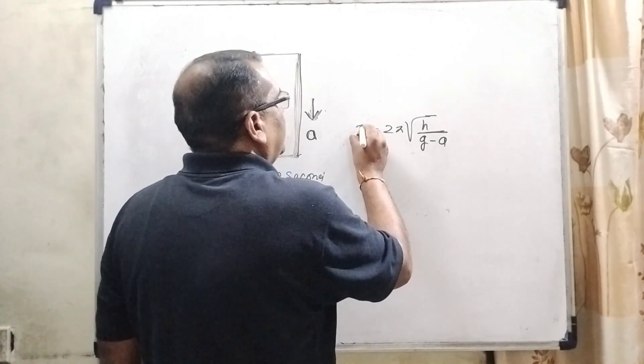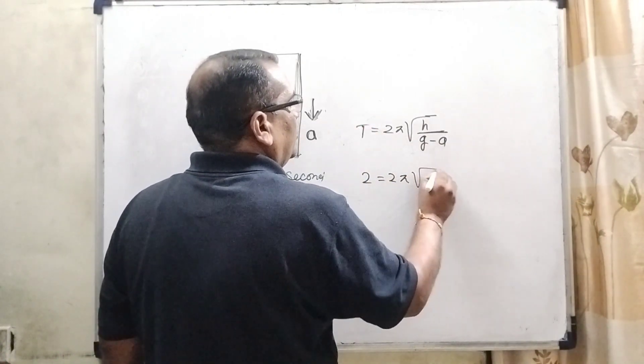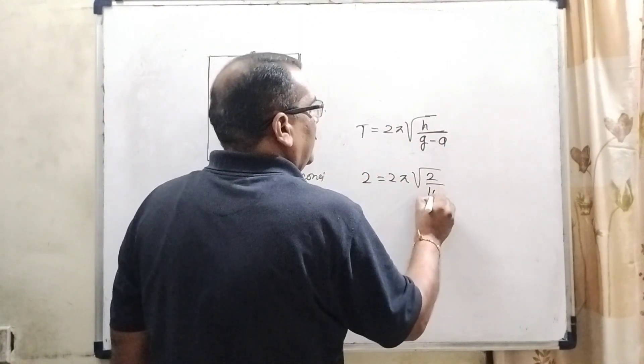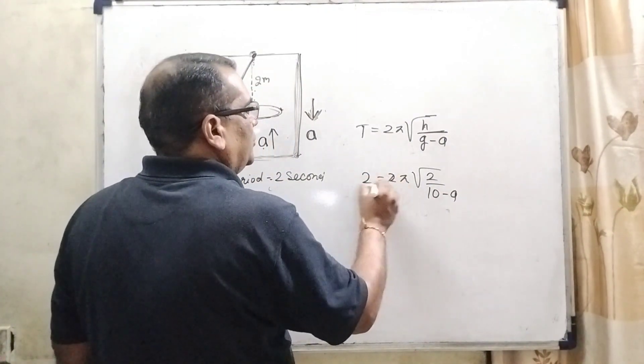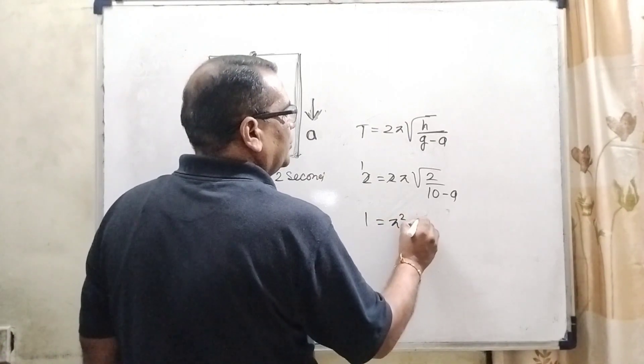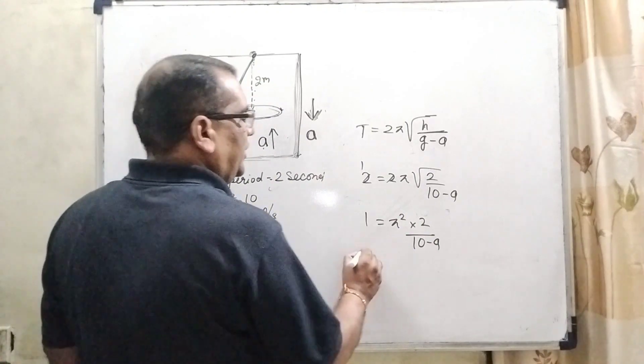So therefore, the effective acceleration is G minus A. Here, time period T is given that is 2. The formula is T equals 2 pi root H over G minus A. H is already given that is 2 meters. Here we substitute: 2 equals 2 pi root of 2 over 10 minus A.